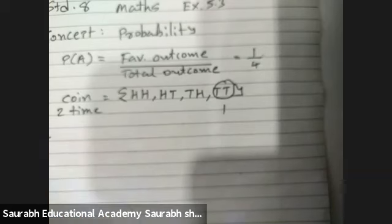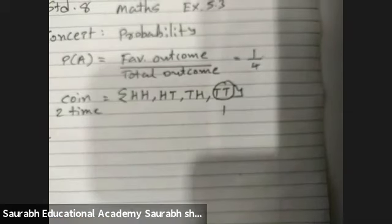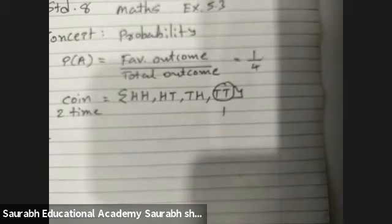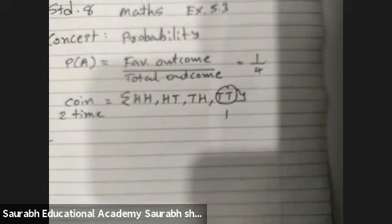Okay, now let's start with the sum. Question one: List out the outcomes you can see in the experiment. A: Spinning a wheel, and B: Tossing two coins together.